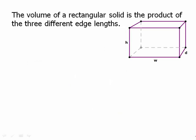The volume of a rectangular solid is the product of the three different edge lengths. So we have four edges that are the length of h, four edges that are the length of w, and four edges that are the length of d. And we just take the product of these three numbers. The volume is h times w times d. Height times width times depth.